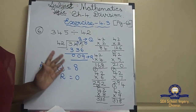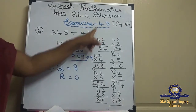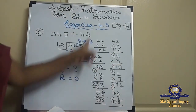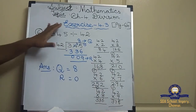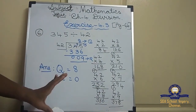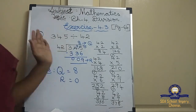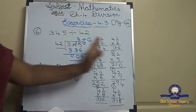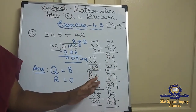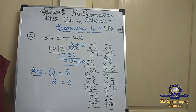Write neatly in the classwork note. Draw a line for the rough work and do one sum below another sum — don't do two sums at a time. One sum at a time, with rough work on the side. Okay children, we will meet in the next class. Thank you.